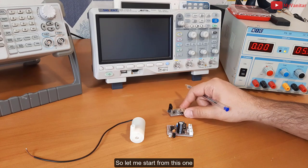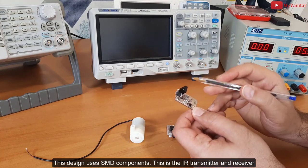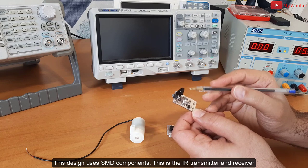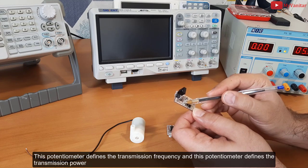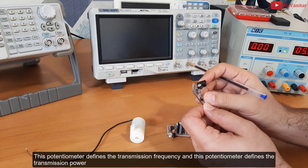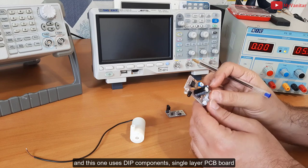Let me start from this one. This design uses SMD components. This is the IR transmitter and receiver. This potentiometer defines the transmission frequency, and this potentiometer defines the transmission power.